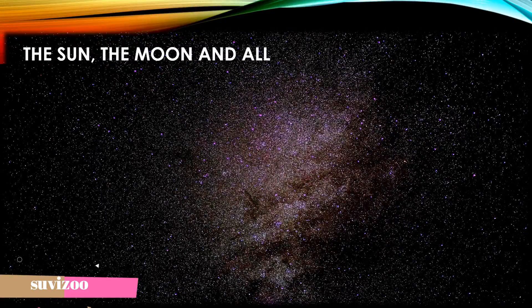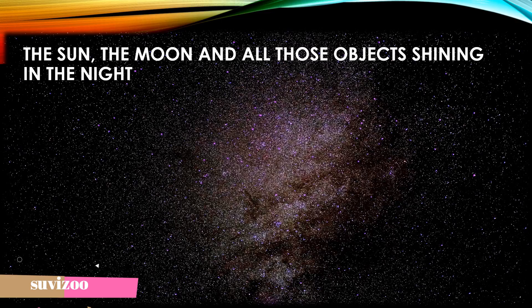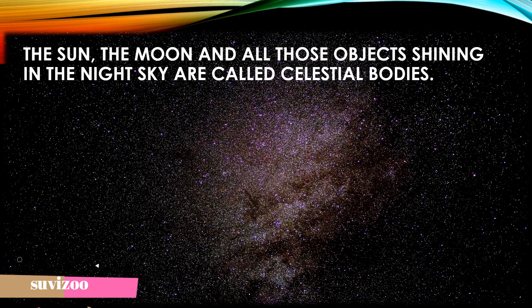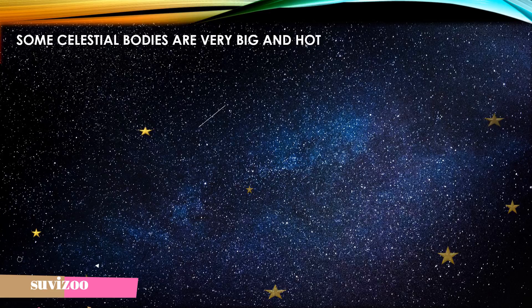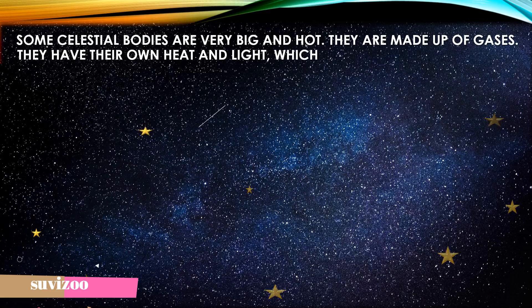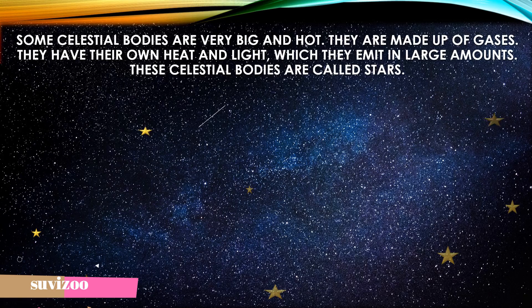The sun, the moon and all those objects shining in the night sky are called celestial bodies. These bodies are also known as heavenly bodies. Some celestial bodies are very big and hot. They are made up of gases. They have their own heat and light which they emit in large amounts. These celestial bodies are called stars.